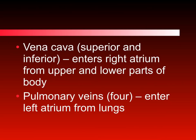The aorta carries blood that is high in oxygen because blood from the left atrium passed through the mitral valve into the left ventricle and exits through the left ventricle — so it carries highly oxygenated blood. The pulmonary trunk carries blood that came from the right atrium through the right ventricle and through the pulmonary semilunar valve, so it carries blood that is low in oxygen.